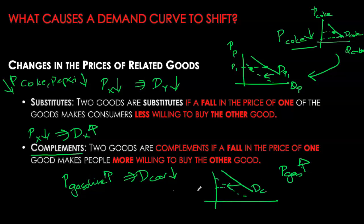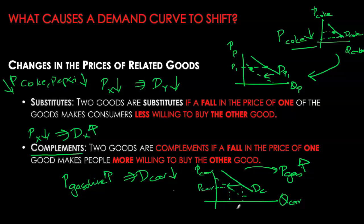Remember, when we draw a particular demand curve we have price of cars and quantity of cars on the two axes. The demand curve here represents the relationship between these two. If something other than the price of cars — in our case, the price of gasoline — is changing, this is going to cause a shift in the curve. At any given price of a car, overall quantity demanded has reduced.